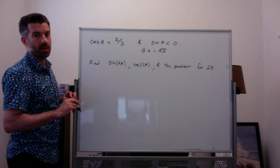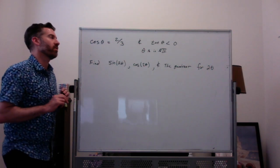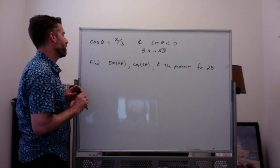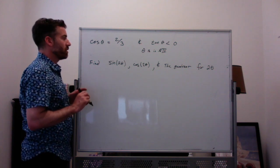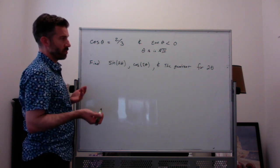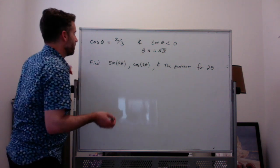Hi Massey students! Here is an example of using the double angle formulas to find sine, cosine, and the quadrant that 2 theta is in.